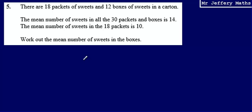This is question five from a series of videos taking a look at the Edexcel practice papers. We're told that there are 18 packets of sweets and 12 boxes of sweets in a carton. The mean number of sweets in all 30 packets and boxes is 14, and the mean number of sweets in the 18 packets is 10. We're asked to work out the mean number of sweets in the boxes.